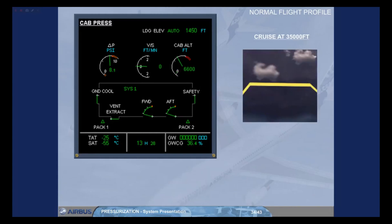Once established in cruise, the cabin altitude and differential pressure will remain steady. The outflow valves will move as required to maintain the cabin altitude. In the example shown, the aircraft is in cruise at 35,000 feet. Notice the values of differential pressure and cabin altitude.